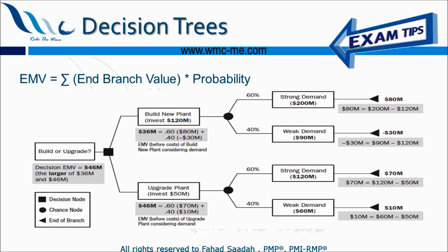I need to estimate the cost of each option. If I build a new plant, I will be investing 120 million dollars. I may use the three-point estimate or another method to arrive at this figure. On the other hand, upgrading the existing plant is expected to cost an investment of 50 million dollars.